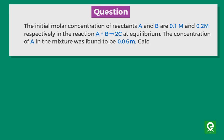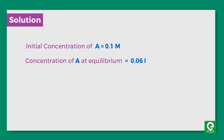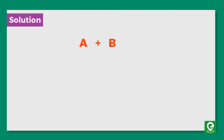Solution: We are given initial concentration of A is equal to 0.1 M. Concentration of A at equilibrium is 0.06 M, so concentration of A reacted will be 0.1 minus 0.06, which equals 0.04 M.